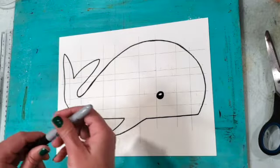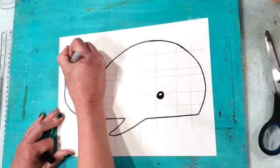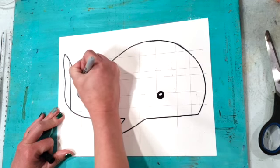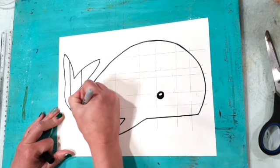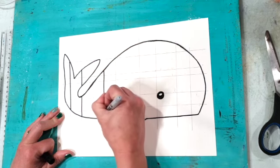Now that I have the lines on my whale I'm going to use my sharpie to trace over them. I'm trying to be careful to make sure that my lines are still straight.